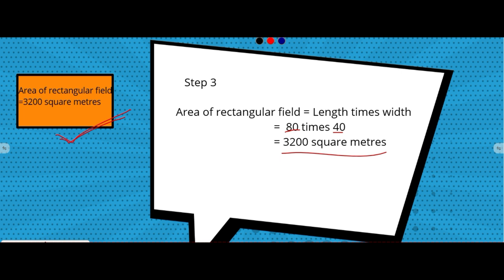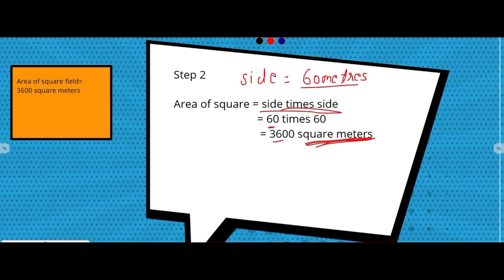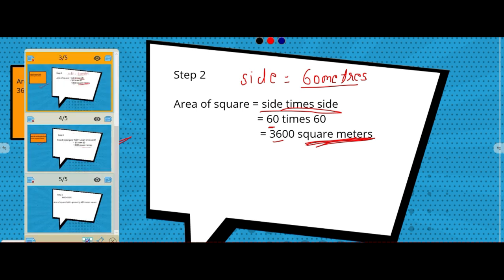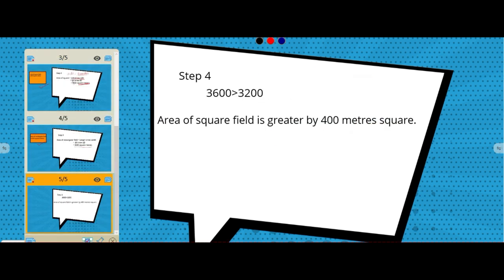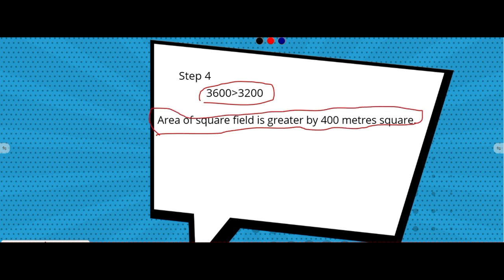Comparing the two areas: 3600 is greater than 3200, so the area of the square field is greater than the area of the rectangular field by 400 square meters. Therefore, the square field has the larger area.